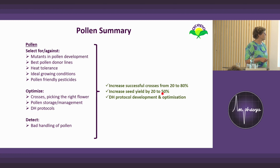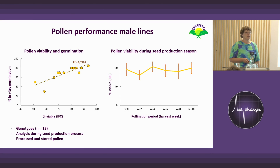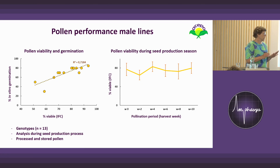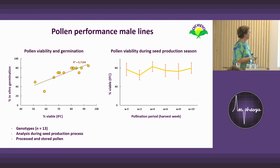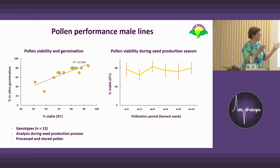This question came up while working with a seed producer and his customer. I had analyzed all the processes at the seed producer's with regards to his pollen management — it was all fine. But I had only a few lines and never the whole set of the production. So what we did is check all 13 males for pollen viability and germination — all okay, though one was a little bit low. We also checked pollen viability during the pollination season — all good. Then we asked: what about the ovules?